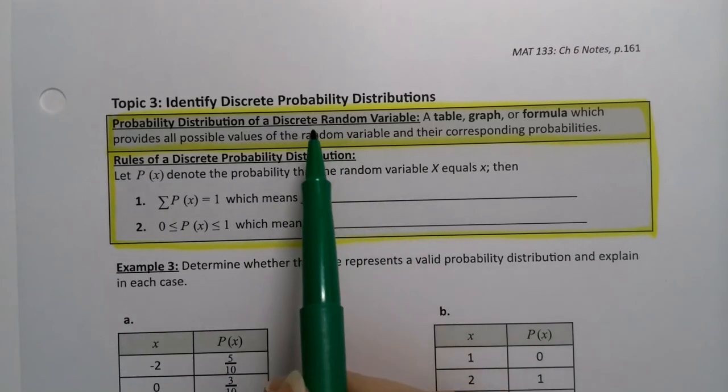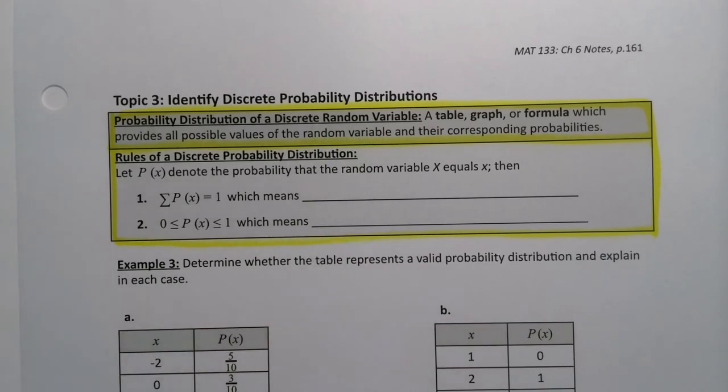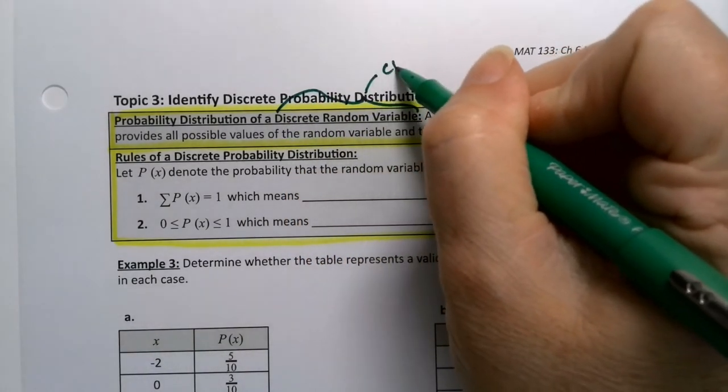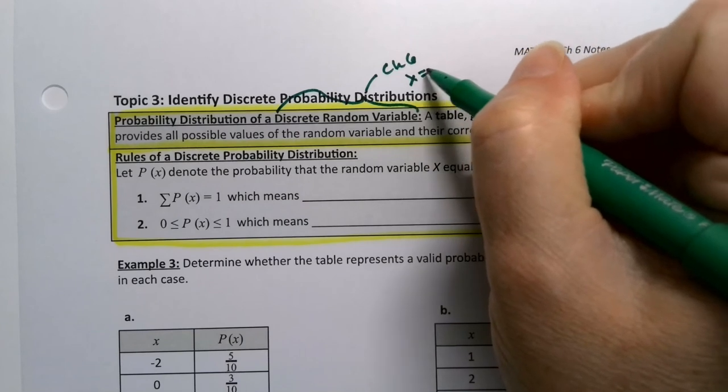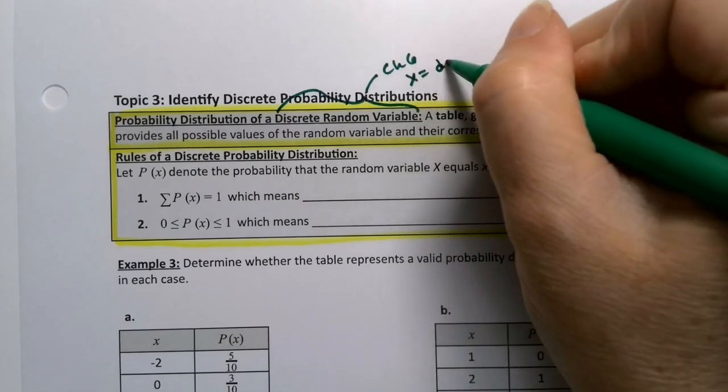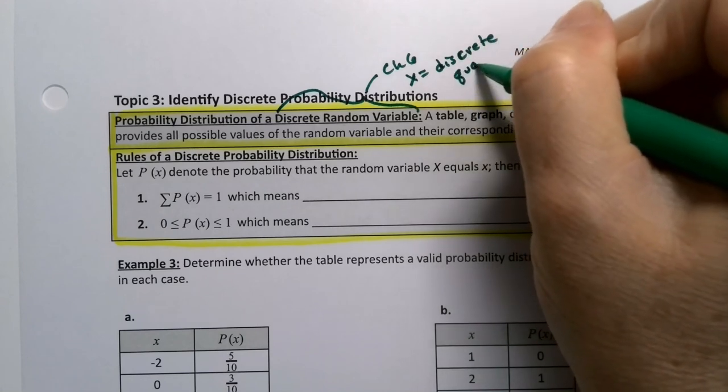All of these tables have the x value being numerical and discrete. That's all that's changed from previous sections when we learned about this in chapter 5. For us in chapter 6, x will be discrete and quantitative.